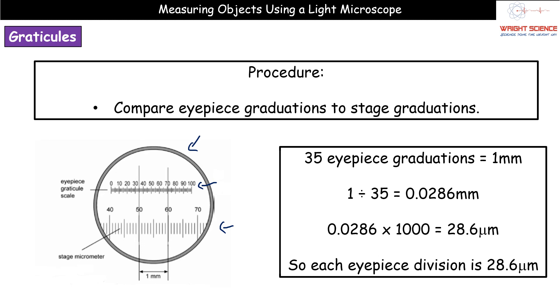Now once you've calibrated that you could then place your specimen under that same objective lens and then work out how many of those eyepiece little graduations go from one side of an object to another. We can then just multiply it by 28.6 and we now know the size of that particular object under the microscope.